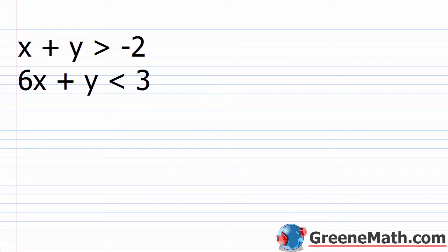I want to revisit something that we talked about in Algebra 1. It's basically the same thing, but I want to make sure you understand it before we get into college algebra. When we talk about a system of linear inequalities, we have x plus y is greater than negative 2, and 6x plus y is less than 3. The solution is where the two graphs overlap — the area of the coordinate plane that satisfies both. So all I need to do is graph each inequality and look for the overlap.